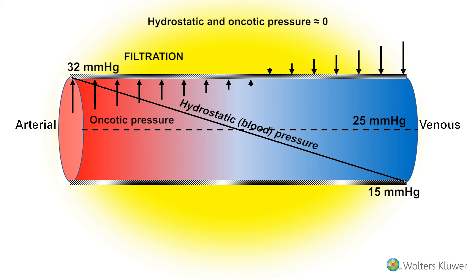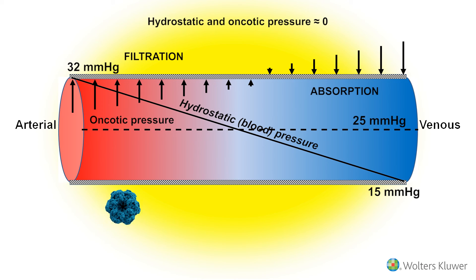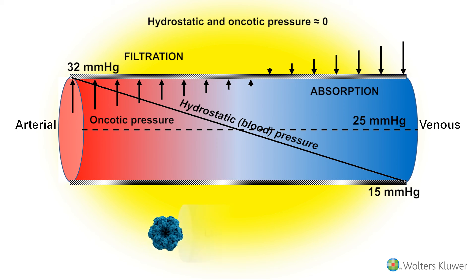On the venous end, transmembrane flow is towards the capillary, resulting in absorption. Large molecules, such as proteins, are too large to be absorbed through the capillary membrane.